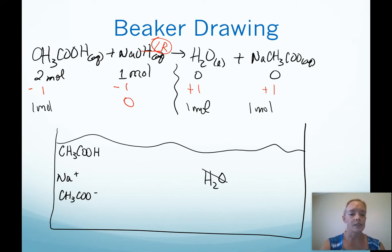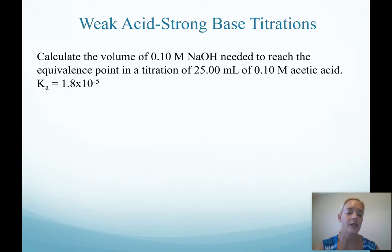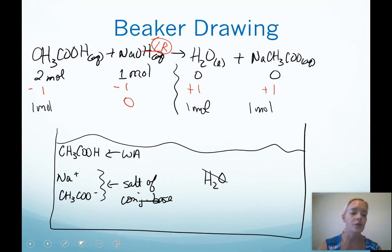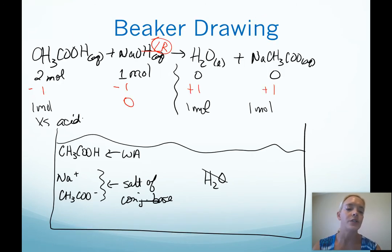What I hope you recognize at this point is I have a weak acid in solution and I have a salt that's made from its conjugate base. Where have you heard that phrasing before? If you said in a buffer solution, you are absolutely correct. And so this region where we have excess acid in our weak acid strong base titration is called the buffer zone.